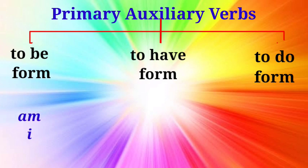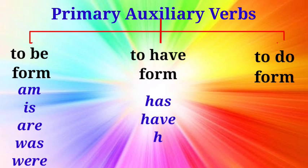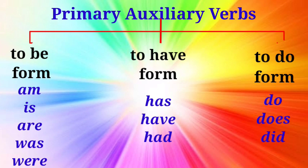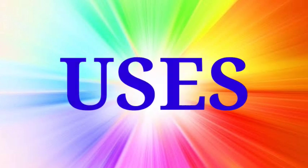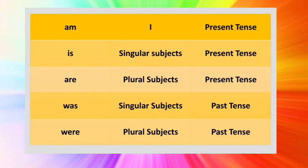The helping verbs is, am, are, was and were come under to be form. The verbs has, have and had come under to have form. And the verbs do, does, did come under to do form. Let us see how we can use these verbs.